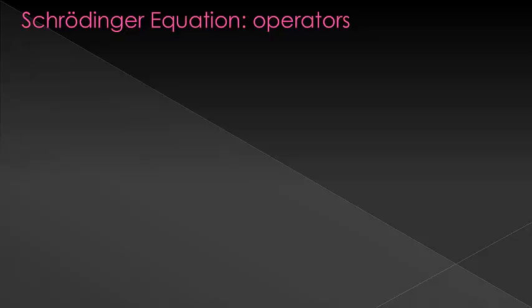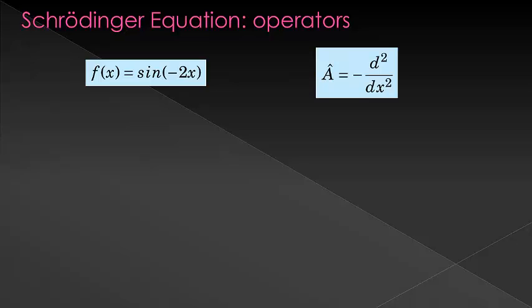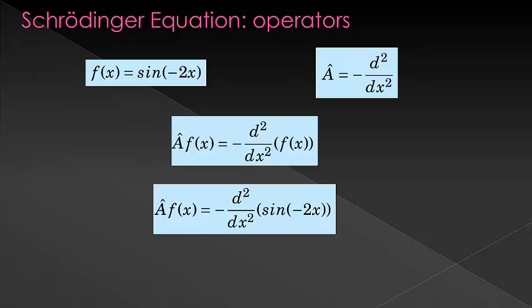If we have a function, let's say sine of 2x, we could operate on it with a double derivative. So here my operator would be take the double derivative. Now just for fun, I put a negative in front of the double derivative too, so that we are doing a particularly well-known operator, but that's relatively unimportant. If we take the derivative of this sine of 2x twice, you can see we get the function back. But now there is also a 4 out front. This would be our energy, or our eigenvalue.